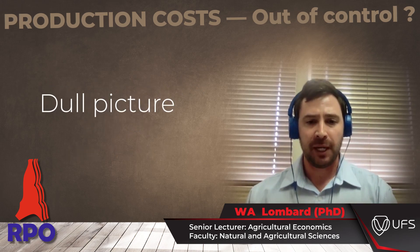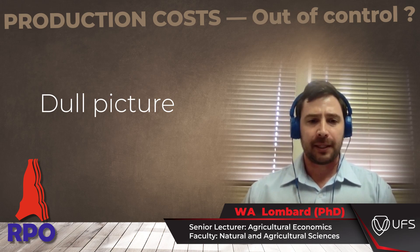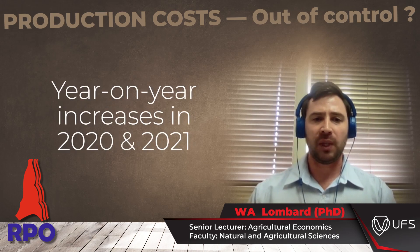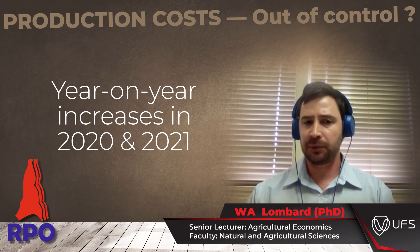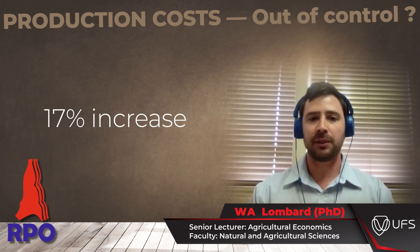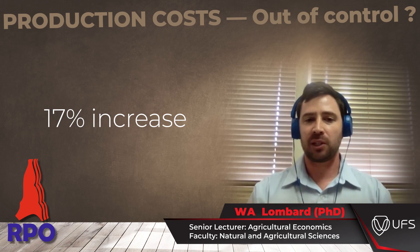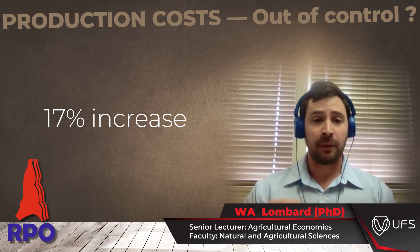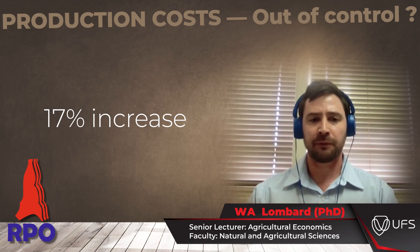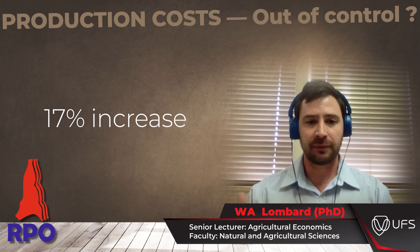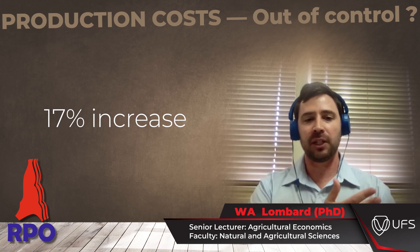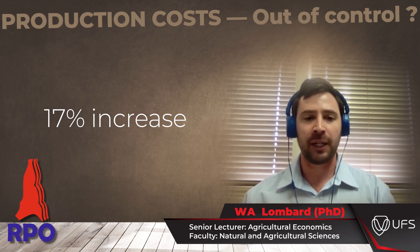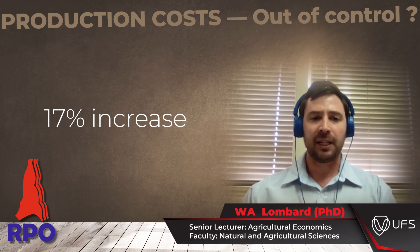We hope things will improve. In 2020 and 2021 we saw a 17 percent increase per year in the weaner calf price, whereas we're now seeing a two percent decrease in the current year. So things were looking better in those two previous years, and we can understand that cattle farmers became more positive about the industry then, and feel a bit more negative in the current year.